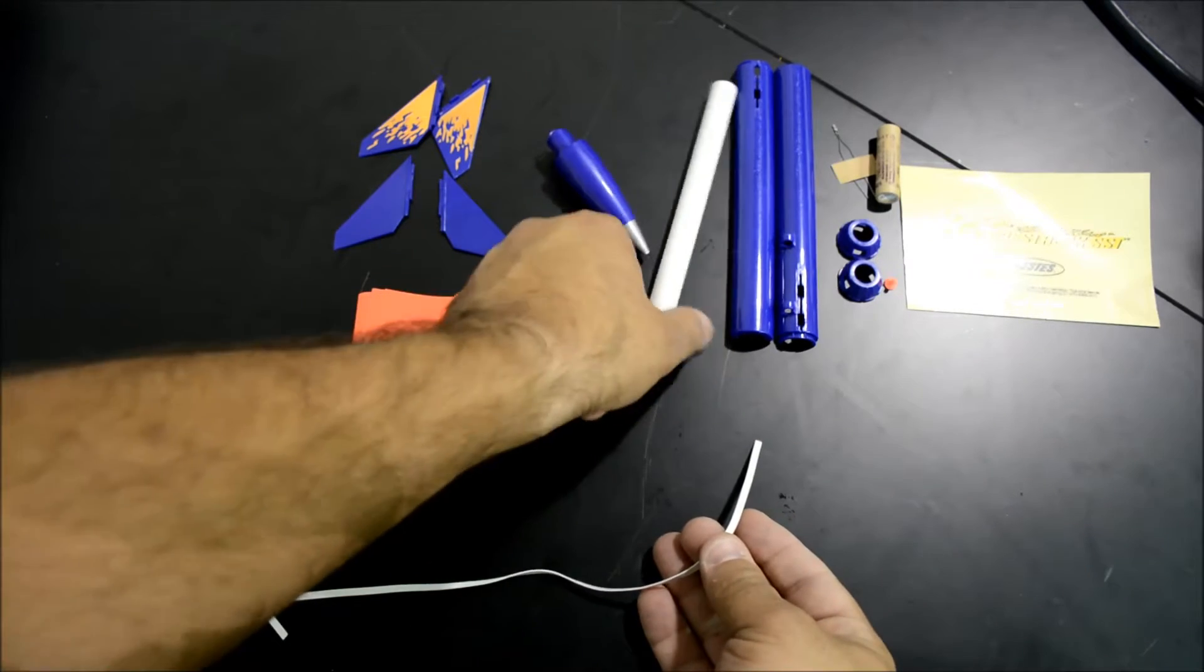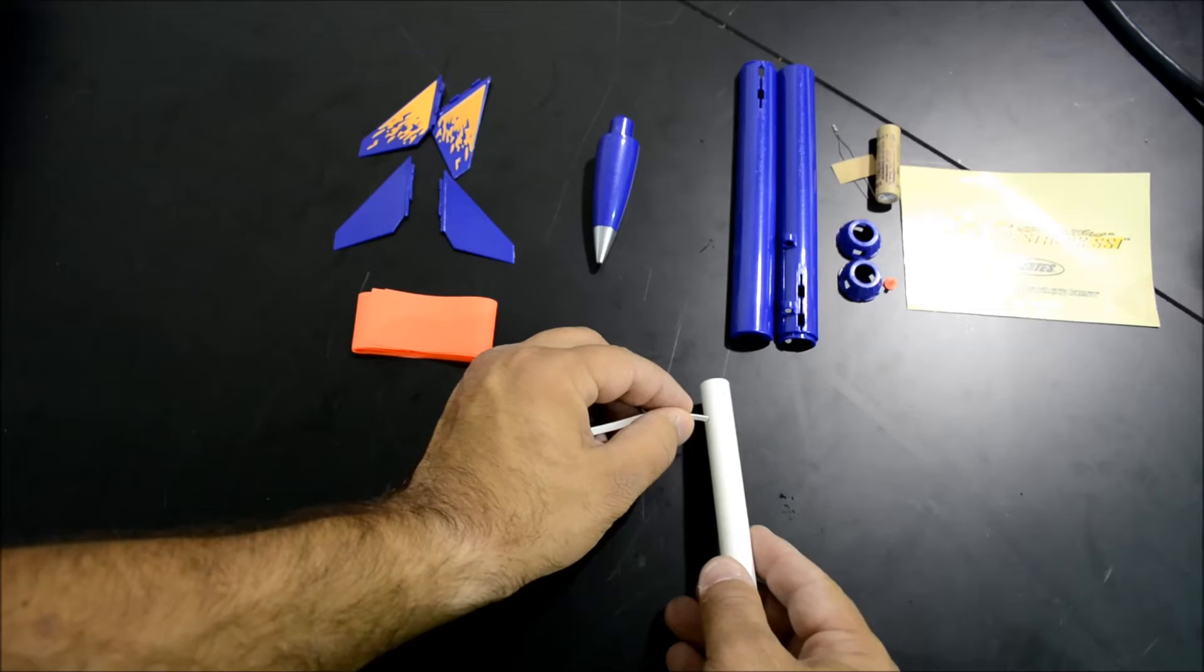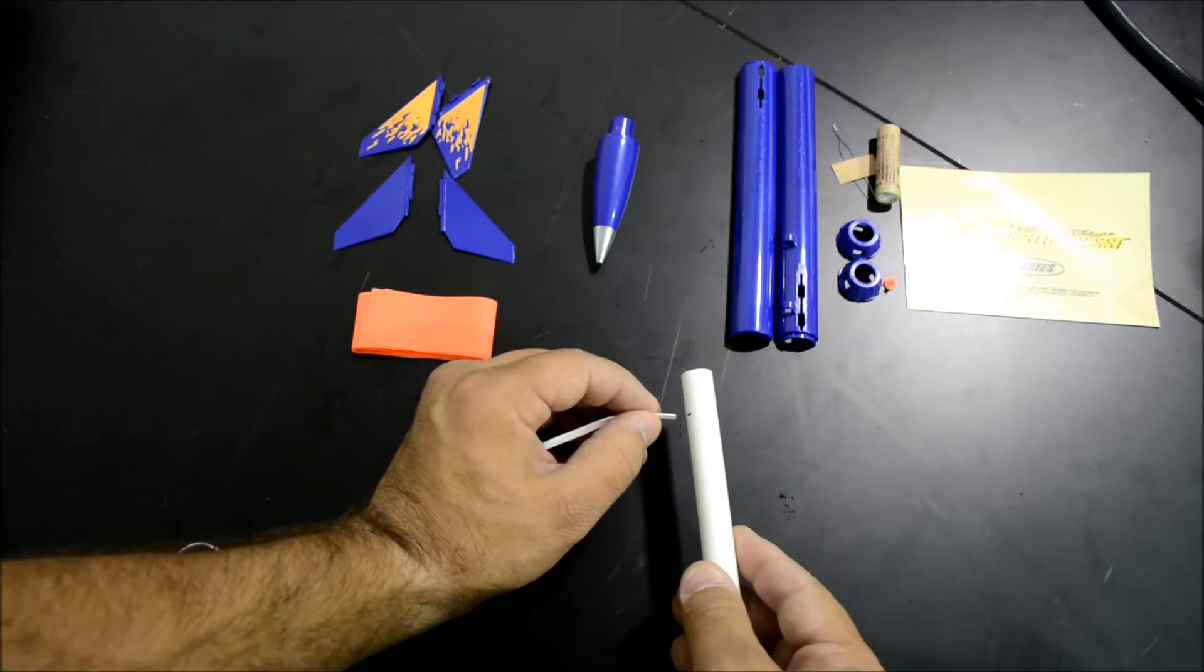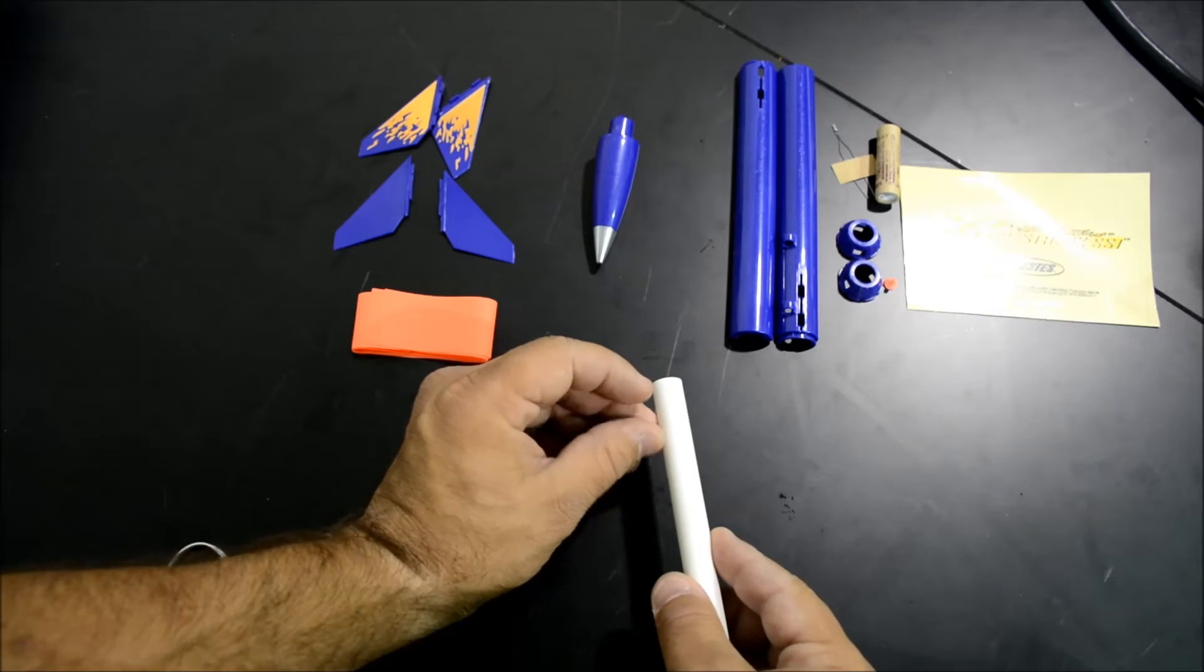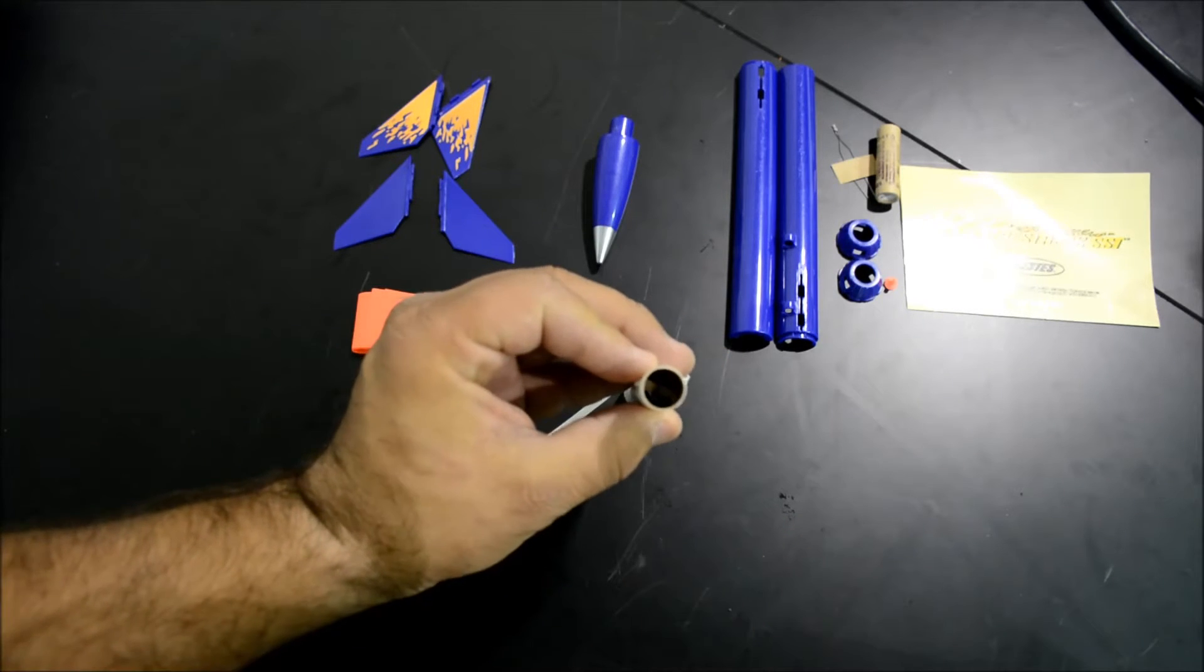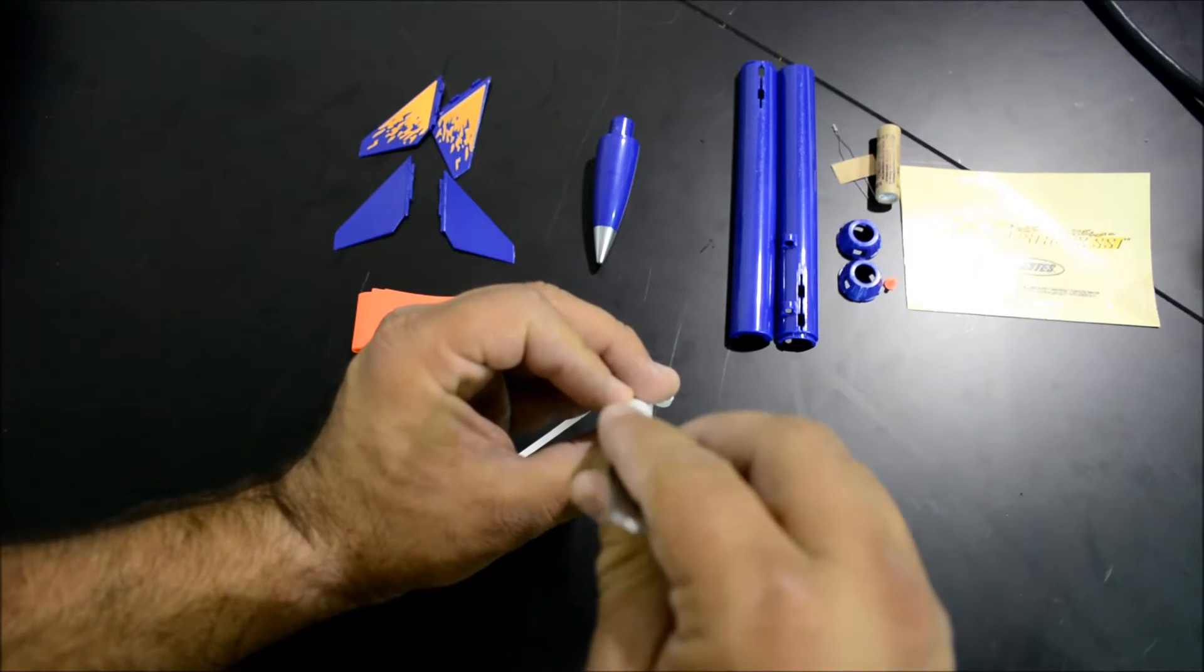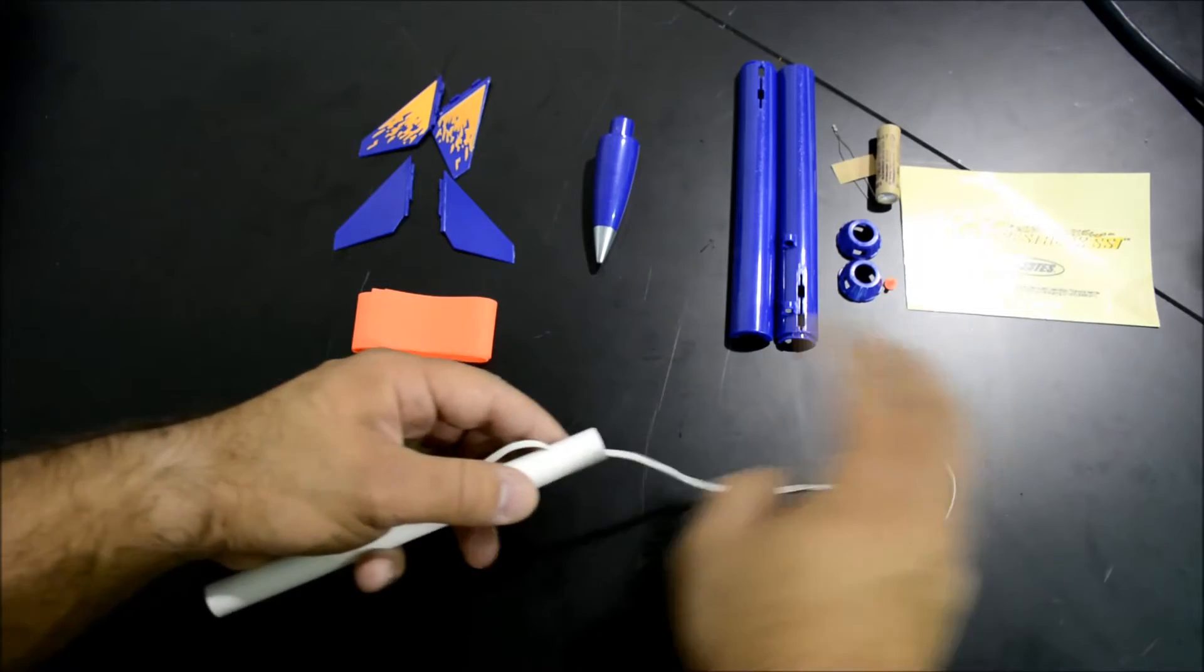Next, we're going to insert the shock cord into the cardboard body tube. Take this shock cord and insert it into the small hole at the top of the tube. You might need something to help you get the shock cord out of there. I'm going to use a pair of tweezers and then we'll just pull.